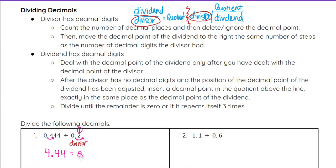Now, once we have a divisor that does not have decimal digits, it's okay to have a dividend with decimal digits. We will just go ahead and divide.